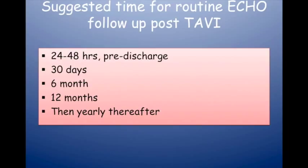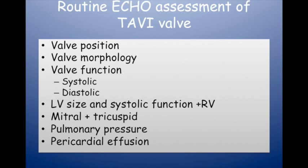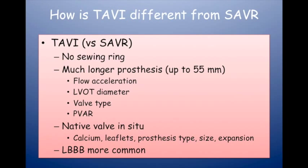How is TAVI different from surgical aortic valve replacement? There's no sewing ring, so the areas you get with TAVI valves are actually bigger and gradients are lower — TAVI valves are hemodynamically better than surgical valves. The native valve is left inside — you still have leaflet tissue, calcium, and the old valve pushed to the side — and the new valve will interact with all of these things. It may not have a circular expansion, which would affect the gradient and area. That's different from surgical valve replacement where you excise the old valve.